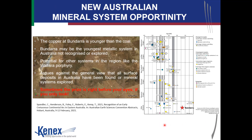This is actually a really interesting discovery in that the copper at Bundara is younger than the coal, which I still struggle to get my head around. This suggests Bundara may be the youngest metallic mineral system in Australia, which has not actually been recognised. There is potential for other systems in the region — we've already seen some like the Waitara porphyry, because these porphyry systems tend to cluster. This argues against the general view that all surface deposits in Australia have been found. Sometimes the prize is right before your eyes if you only look, and that's the beauty of using mineral potential modelling — it helps you look.